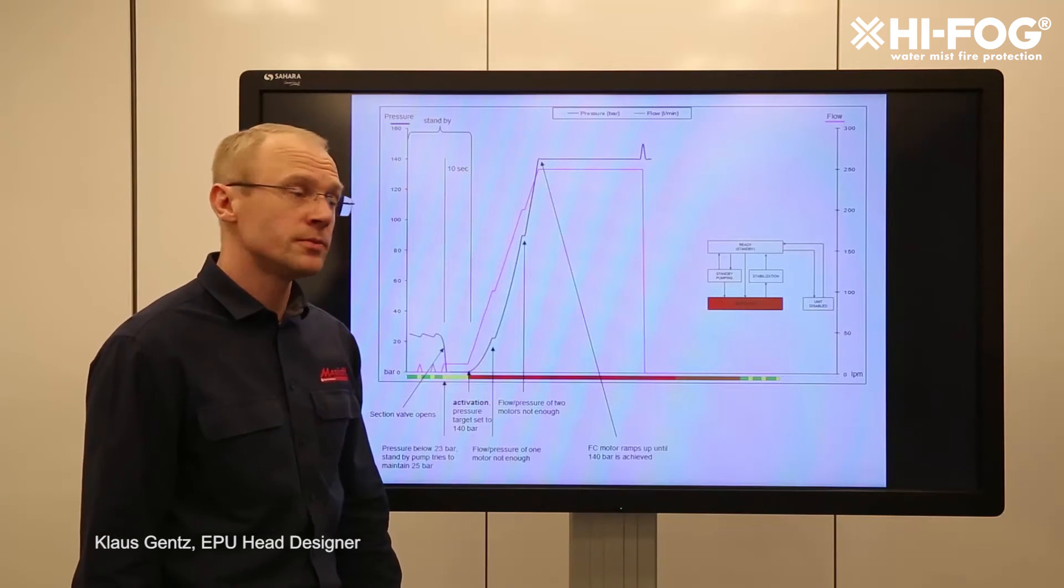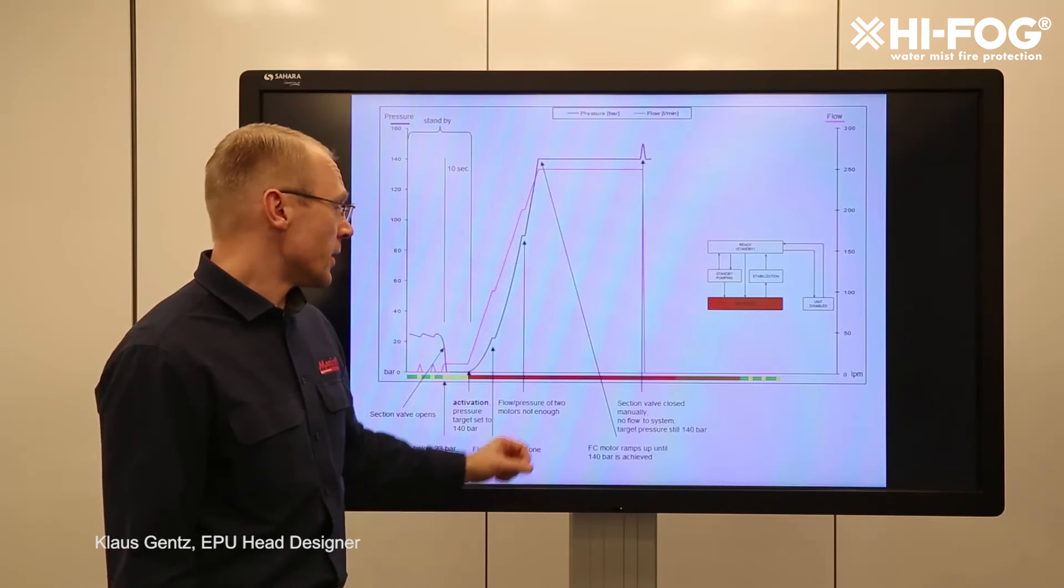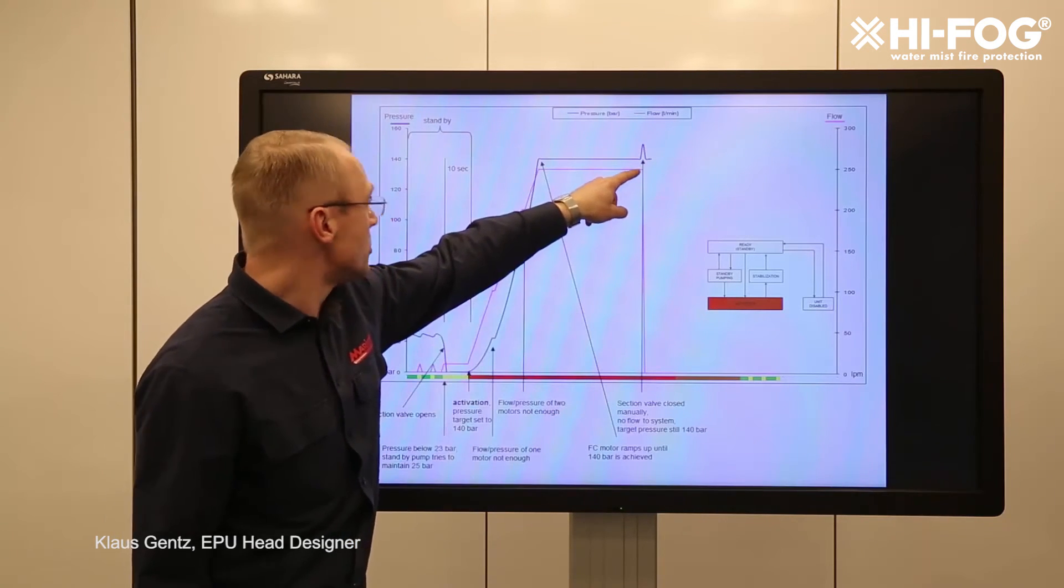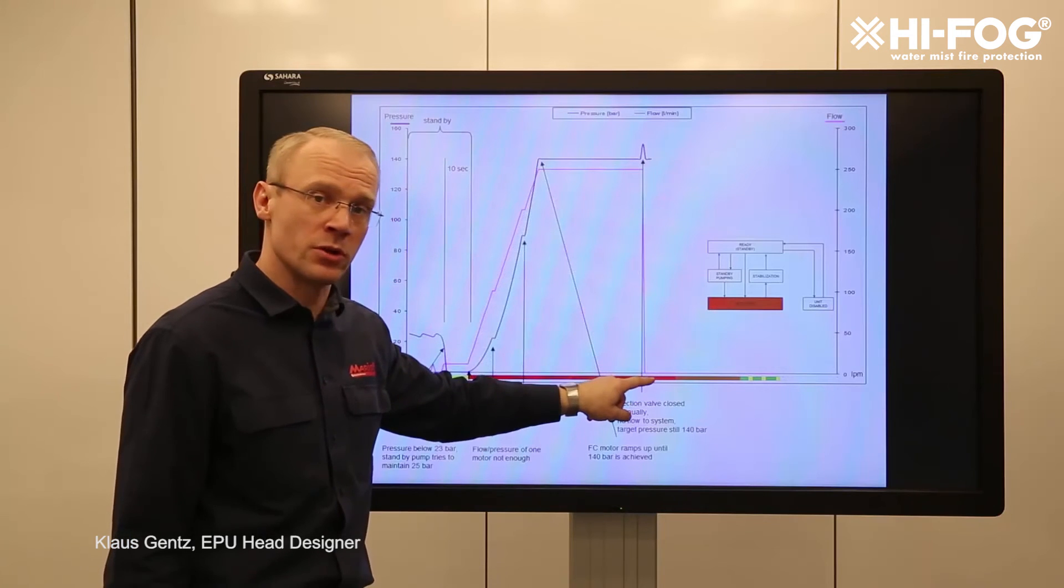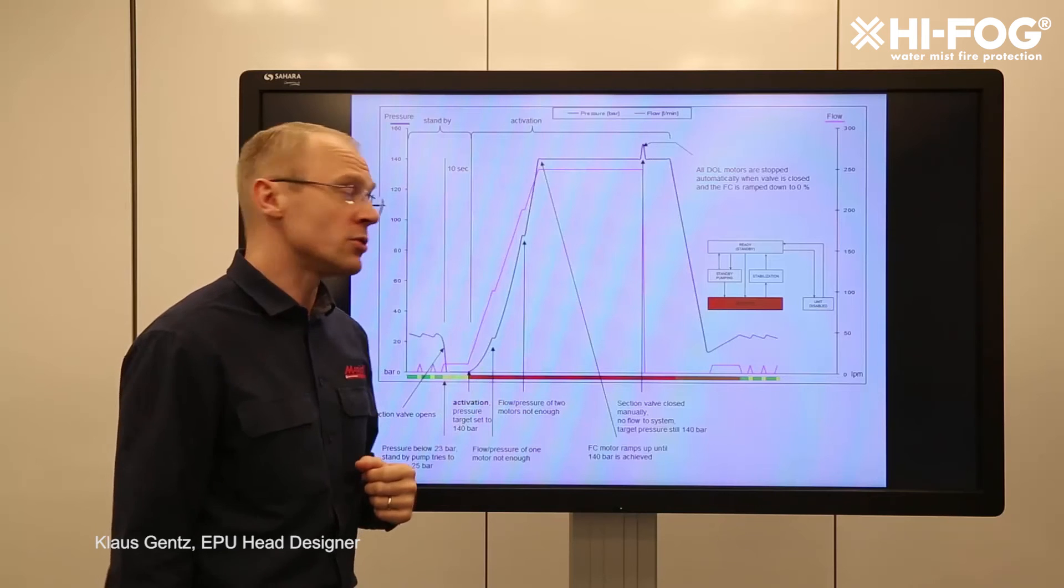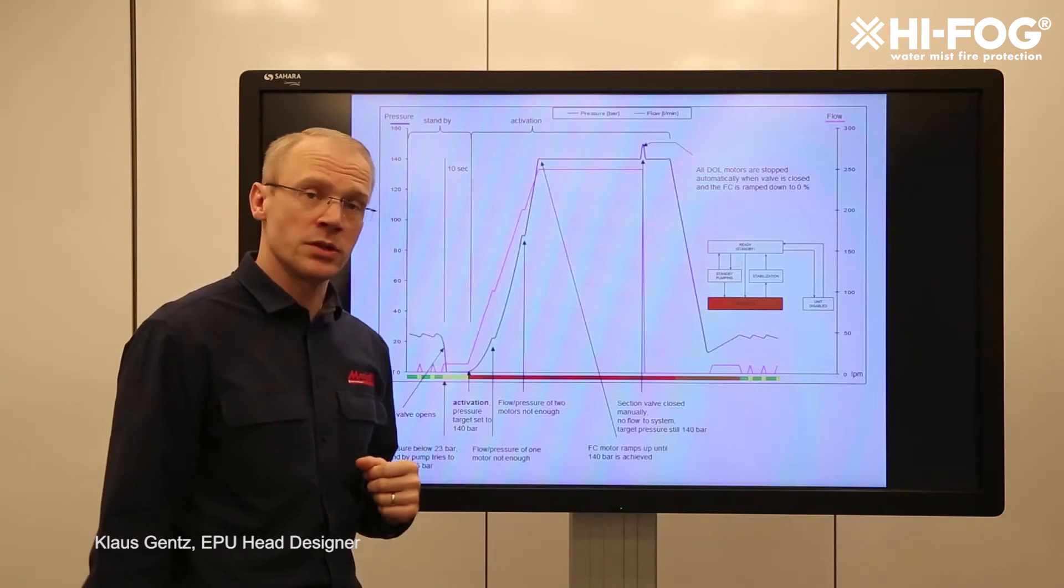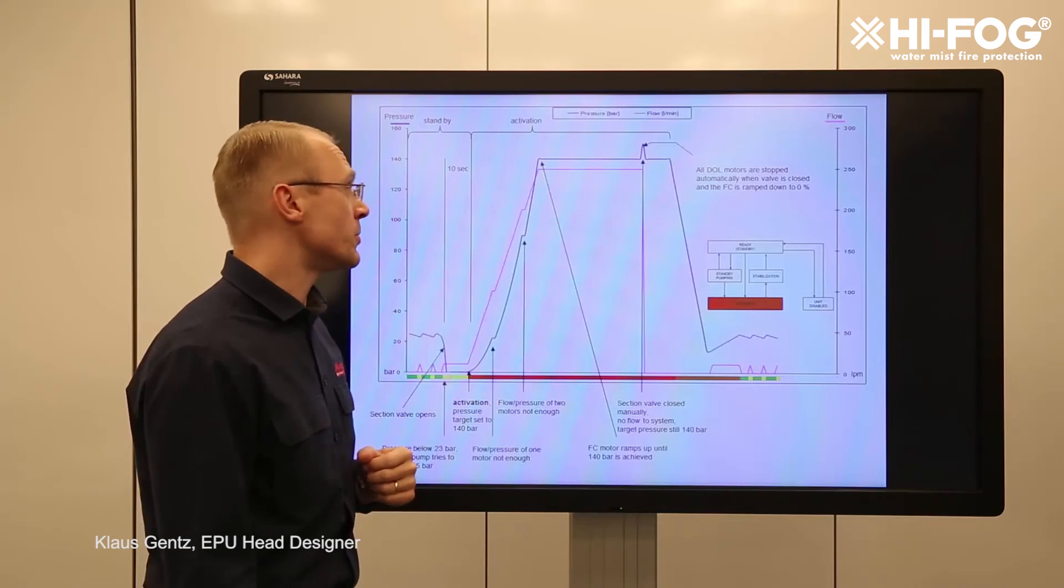Once the fire is put out we can close the section valve and at that point the flow will go from 250 down to zero and at the same time all the motors will be stopped. The direct online motors are stopped all at the same time and the frequency converter is ramped down to zero percent.